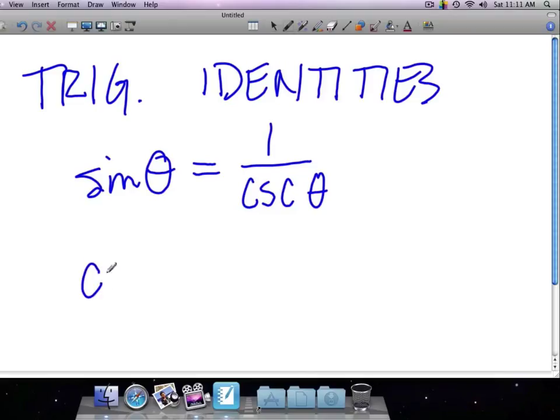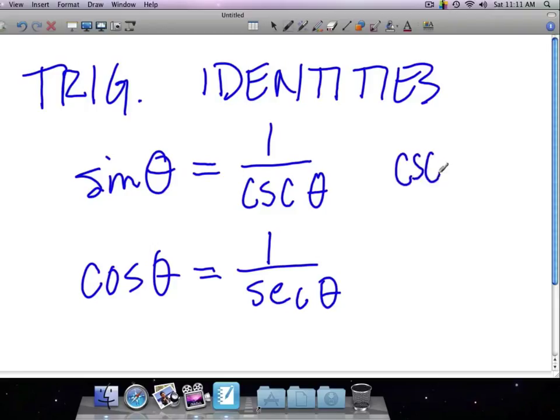We have the others, so let's do those quickly. Cosine of an angle is equal to 1 over the secant of an angle. And of course, both of these can be thought of as the other way around. Cosecant is equivalent to 1 over sine of the angle. And of course, secant of an angle is equivalent to the reciprocal of cosine.